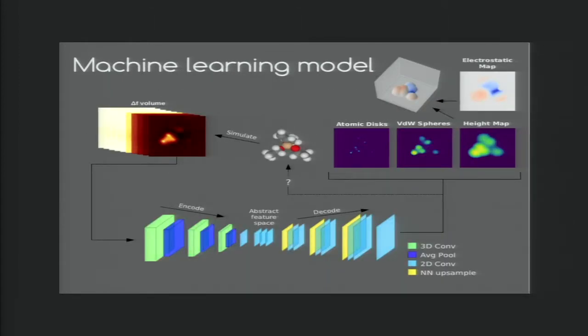Now for the machine learning model, we use a convolutional neural network. The input is a stack of 10 delta F slices at different heights. These are passed through a series of filters starting with some 3D convolutions going down to smaller resolution and then decoded back into some higher resolution.